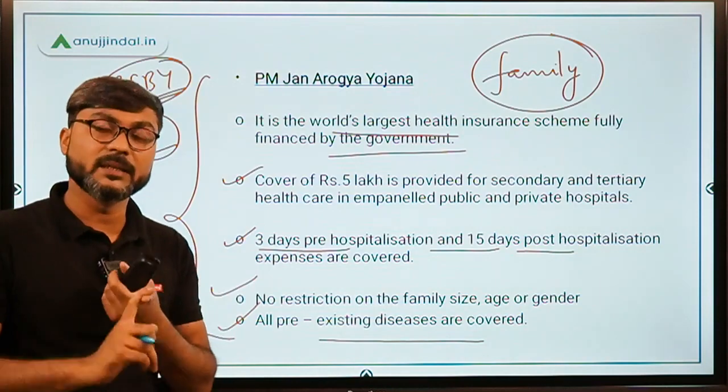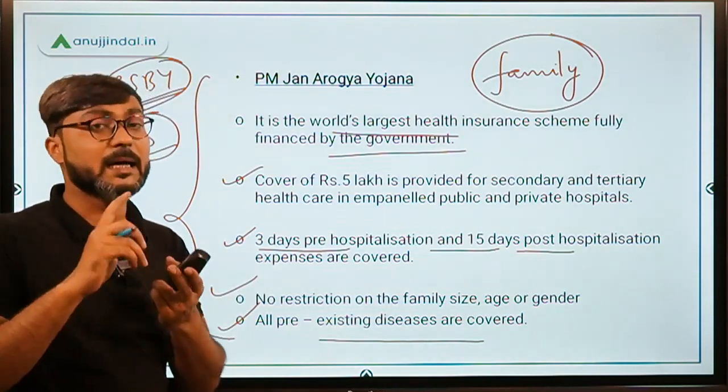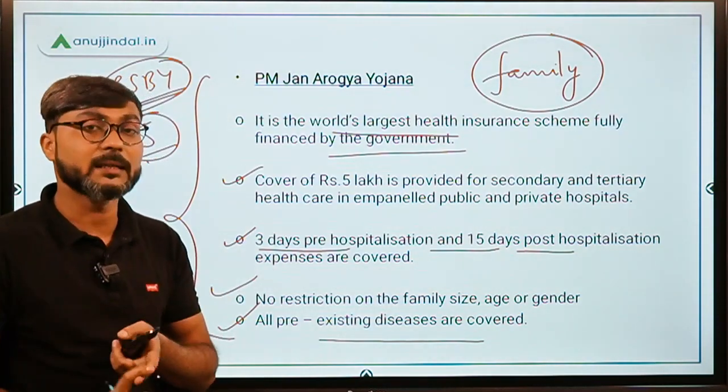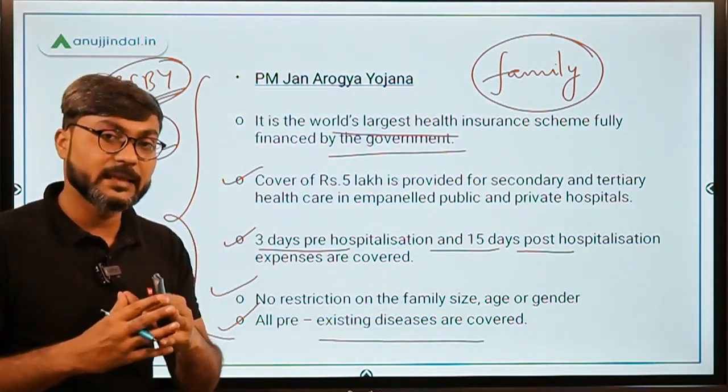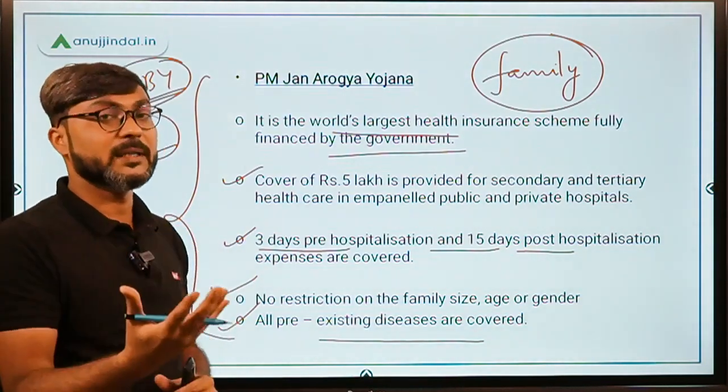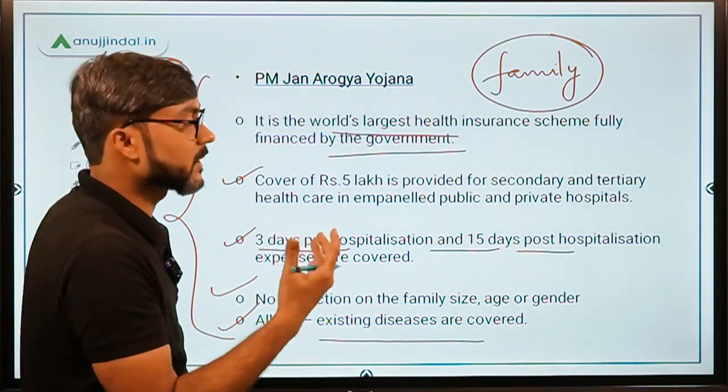When the two components — the Health and Wellness Centers and PMJAY (Pradhan Mantri Jan Arogya Yojana) — are combined, together they are called the Ayushman Bharat scheme.